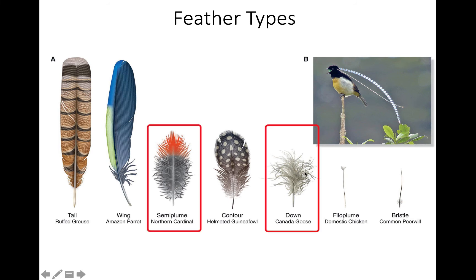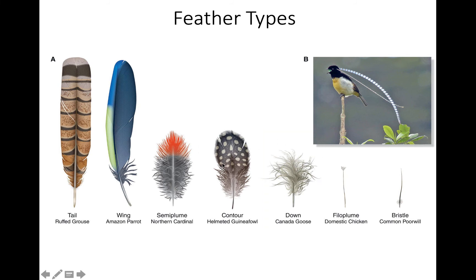Two feather types are primarily responsible for thermal regulation: semi-plumes and down. The semi-plume has a rachis that runs the entire length, while down has no rachis or a very short one with barbs longer than the rachis — that's the key distinction. Covering both of these are contour feathers, which make up most of what you see on a bird besides the wing and tail, giving a smooth contour by overlapping each other.